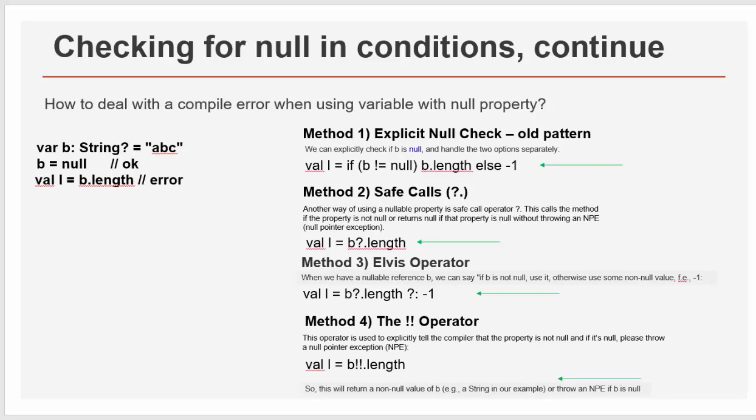Method three is Elvis operator. Strangely, Elvis is the easiest to understand. It sounds maybe a little bit intimidating, but Elvis operator works like the following. When we have a nullable reference B, we can say if B is not null, use it. Otherwise, use some non-null value alternative in this solution. For example, minus one. Do you remember question mark in Java? This is very similar to question mark in Java.